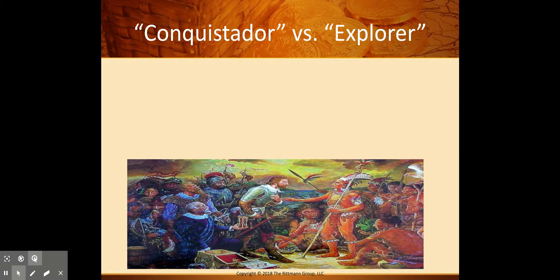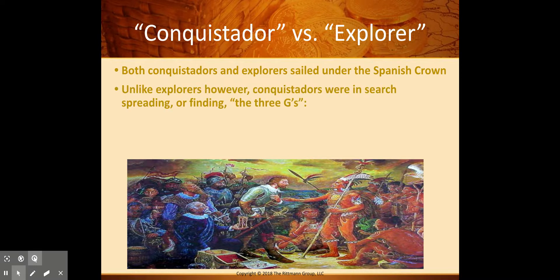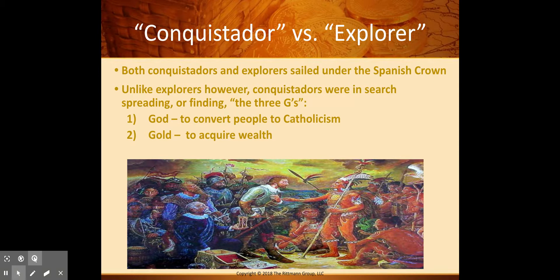We need to talk about two groups of men that came over during this time and some notable figures — the difference between a conquistador and an explorer. Both conquistadors and explorers sailed under the Spanish crown, for the Spanish kings and queens at that time. But unlike explorers, conquistadors were in search of what we call the three G's, which we talked about in our last unit. The first G was God — to convert people to Catholicism. The second was to acquire gold. And the third G was glory.